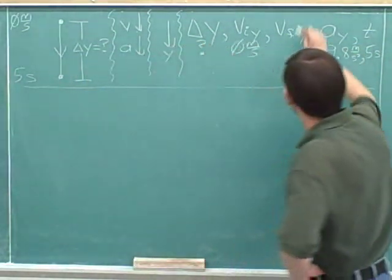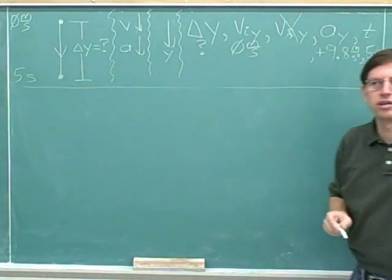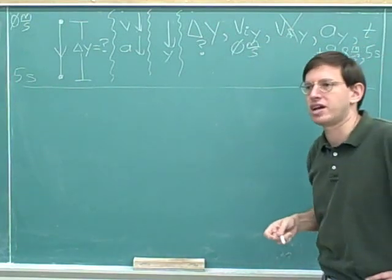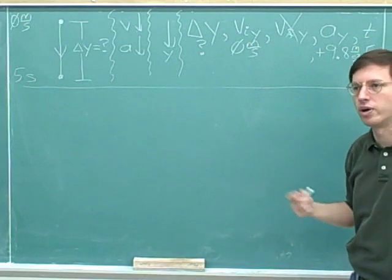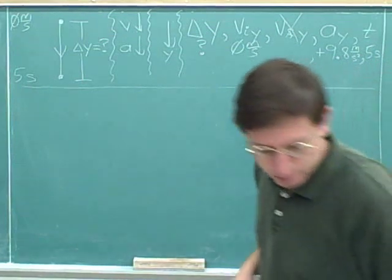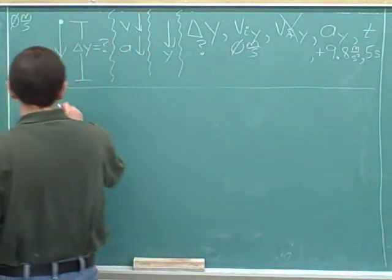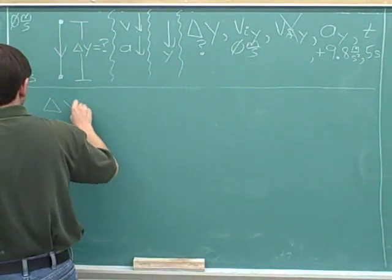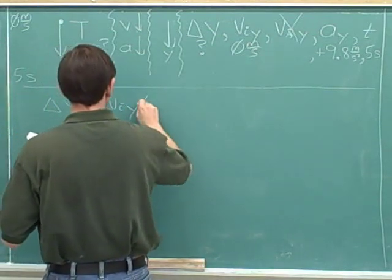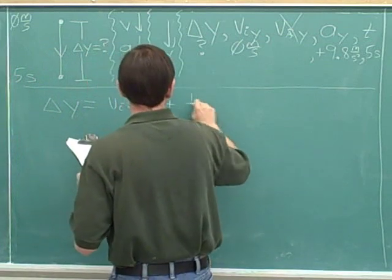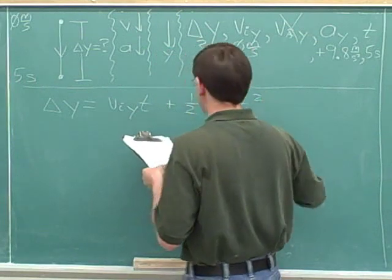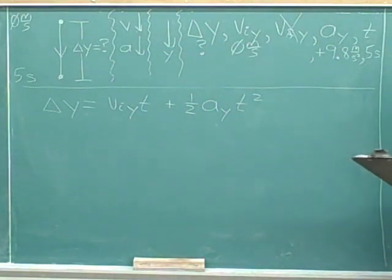The variable that we're pretty much ignoring here is the final velocity. So we want to pick the equation that's missing the final velocity. It shouldn't be that hard to go through our cheat sheet or our memory to figure out which equation is missing the final velocity. Here's the equation that's missing the final velocity.